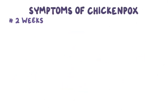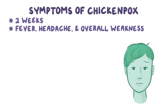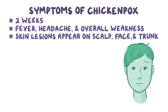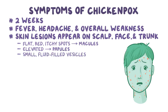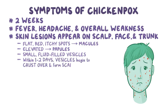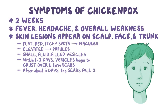Symptoms of chickenpox begin about two weeks after the virus enters the body. The infection usually causes fever, headache, and overall weakness. After a couple of days, skin lesions start to appear on the scalp, face, and trunk. At first, there are flat, red, itchy spots called macules. Over time, they become elevated and develop into papules, and then into small, fluid-filled vesicles. Within one to two days, the vesicles begin to crust over and form scabs. After about five days, the scabs fall off, usually without leaving a scar.